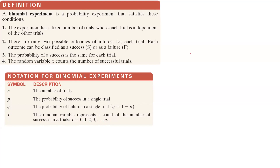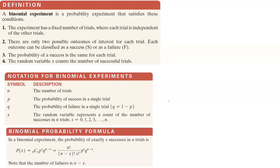Now let's introduce the binomial probability formula. The binomial probability formula is given as P of X, which equals the combination of choosing X values out of n values, times P to the power X, times Q to the power n minus X.